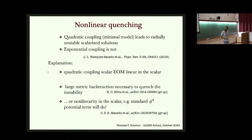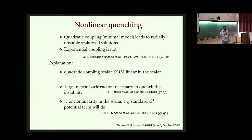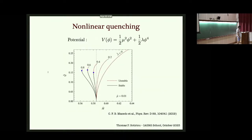This highlights how, even though the onset of the instability is universal and controlled by the coupling to G, the kind of black holes you get after the instability is much more sensitive to the nonlinear corrections. It was later shown that if instead of e^(φ²) you have φ² + φ⁴ with the right coefficient — essentially the expansion of the exponential — the higher nonlinear corrections cure the radial stability problem. Even a standard φ⁴ potential can cure this stability problem.